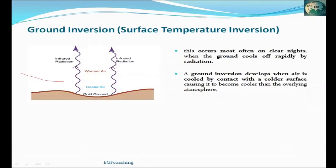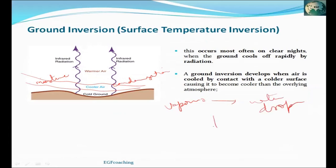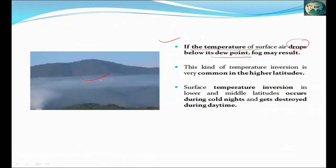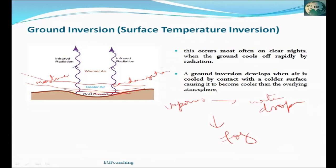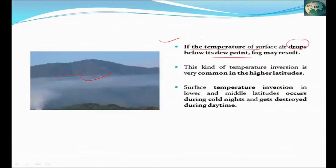If the temperature drops to the dew point, fog can also form. Cool air arrives, moisture is present, condensation occurs — water vapor converts to water droplets, forming fog at ground level. This fog due to inversion dissipates when sunlight comes the next day.